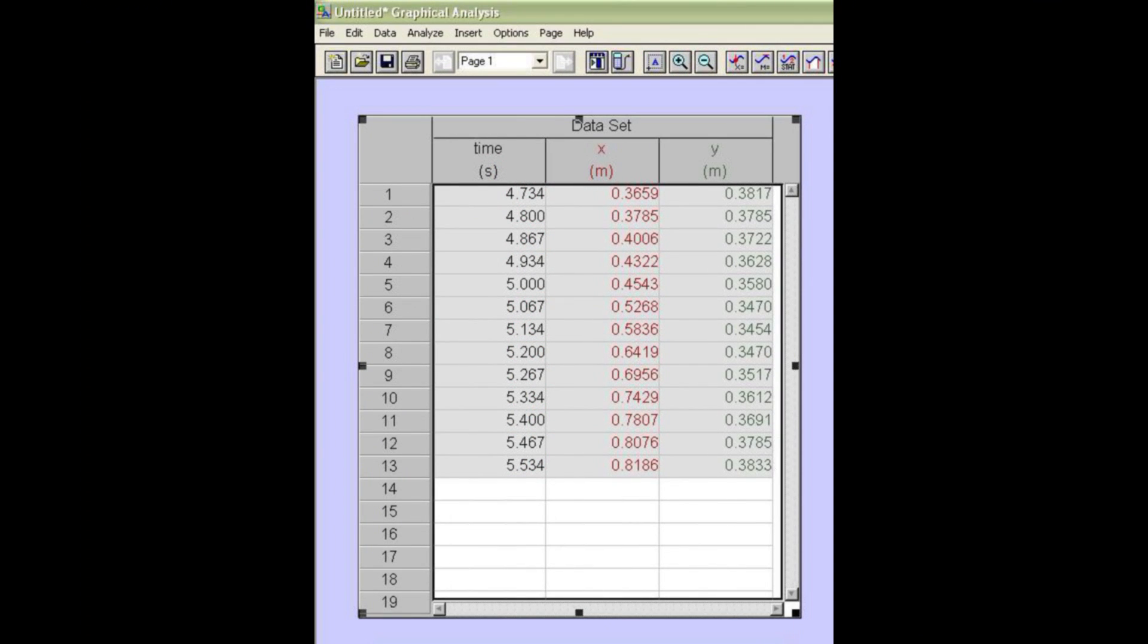Using graphical analysis, relabel the first two columns to represent time and x position values. Use the data menu choice to create a new manual column called y. Paste the data you had copied from video point into these empty cells.